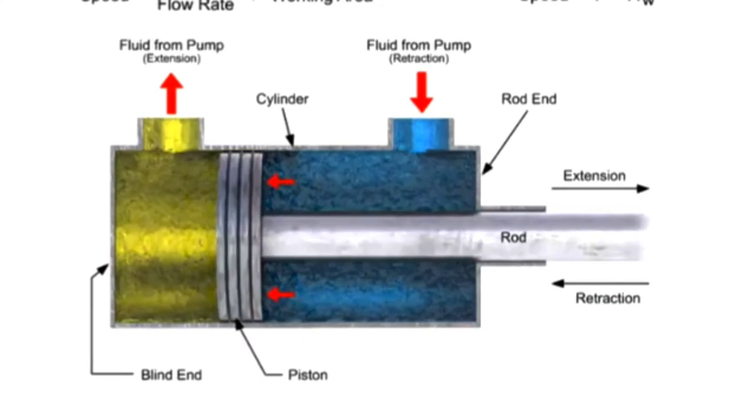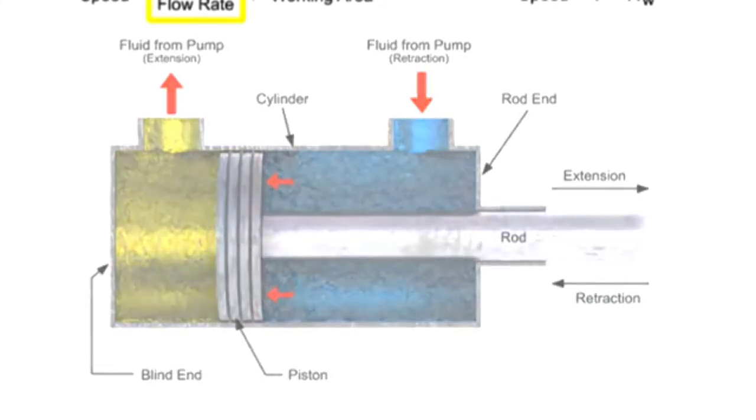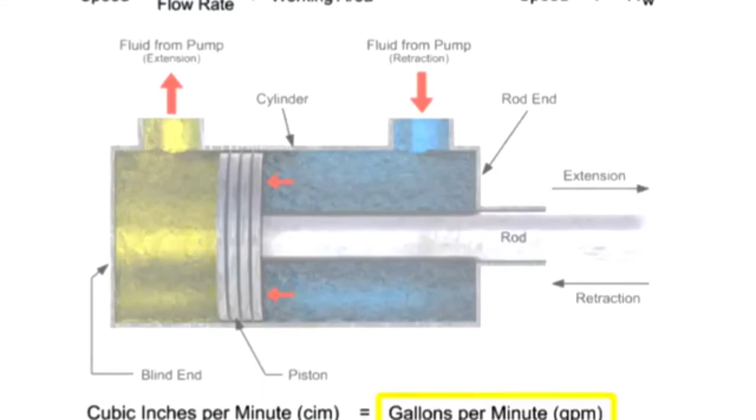The rate at which a particular volume of fluid moves through a system is called the volumetric flow rate. The volumetric flow rate is commonly expressed in either cubic inches per minute or gallons per minute.